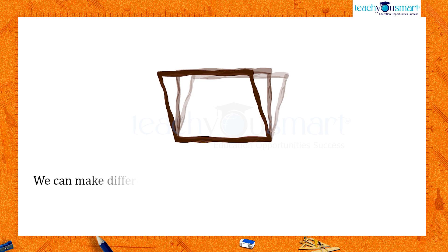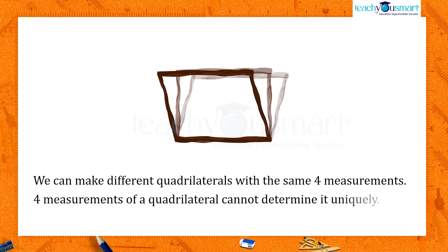That is, we could make different quadrilaterals with the same four measurements. This shows that four measurements of a quadrilateral cannot determine it uniquely.